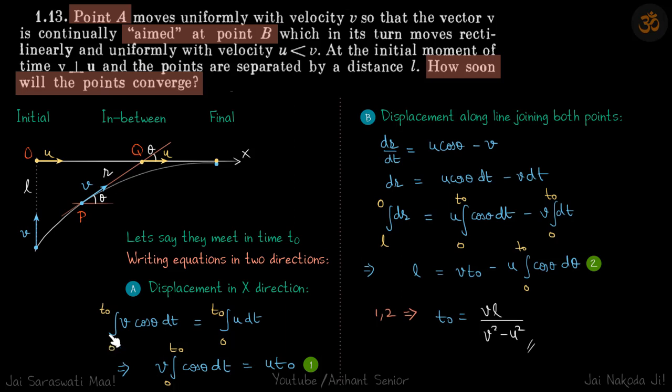So integral of that from 0 to t0 will give the total x of this particle which is equal to total x of this particle. And this is quite simply u dt integral 0 to t0 or you could directly write it as u into t0. So for this particle dx is v cos theta dt and for this particle dx is u dt. We are integrating the dx of both and so this becomes v cos theta dt integral 0 to t0 and this will be 0 to t0 u dt. So simplifying, just taking the v out, we leave this equation here and come back to our second equation which is for the displacement along the line joining both points.